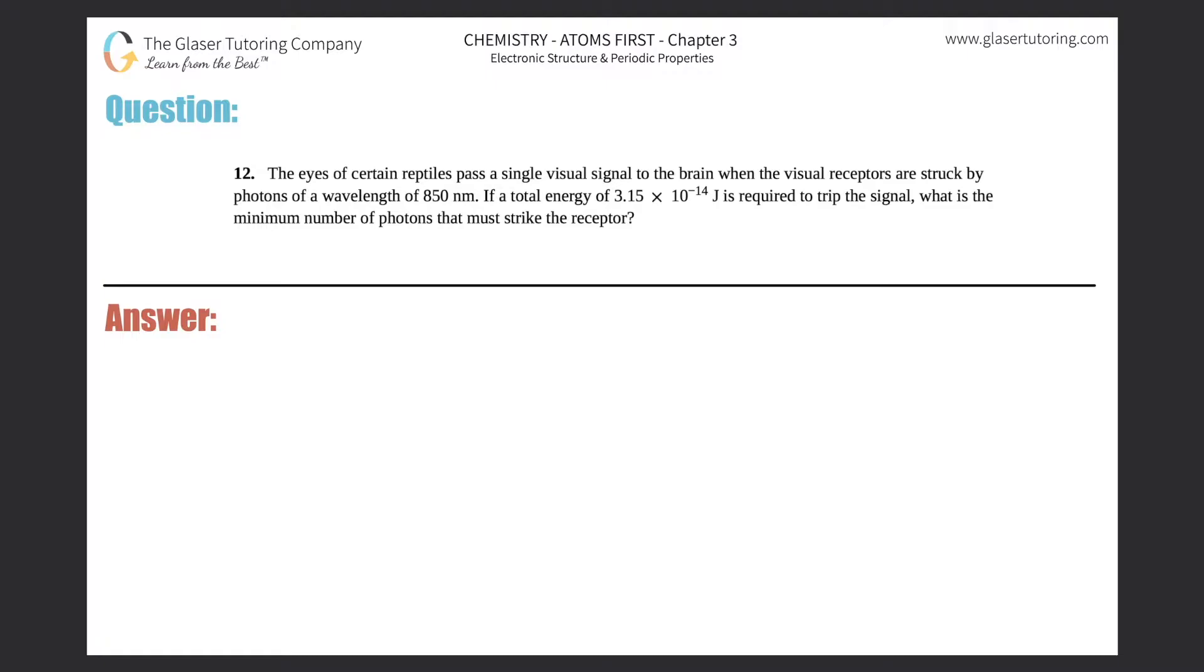Number 12: The eyes of certain reptiles pass a single visual signal to the brain when the visual receptors are struck by photons of a wavelength of 850 nanometers. If a total energy of 3.15 times 10 to the negative 14 joules is required to trip the signal, what is the minimum number of photons that must strike the receptor?